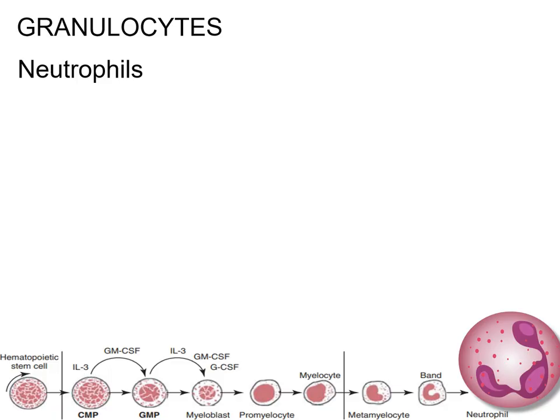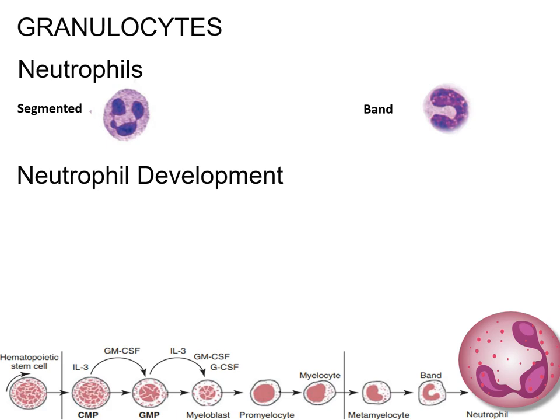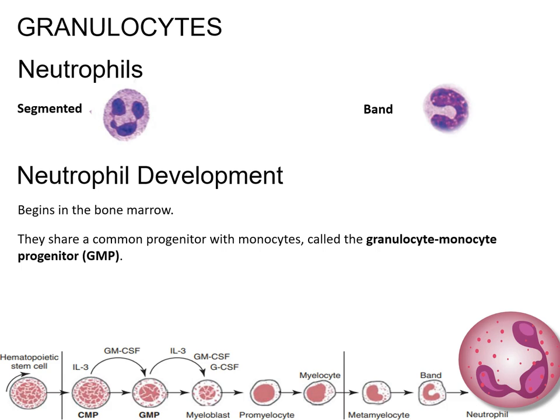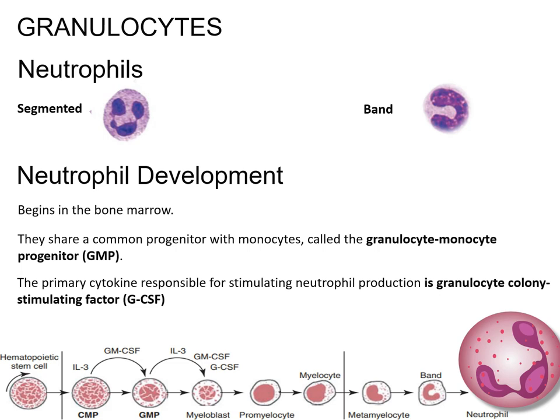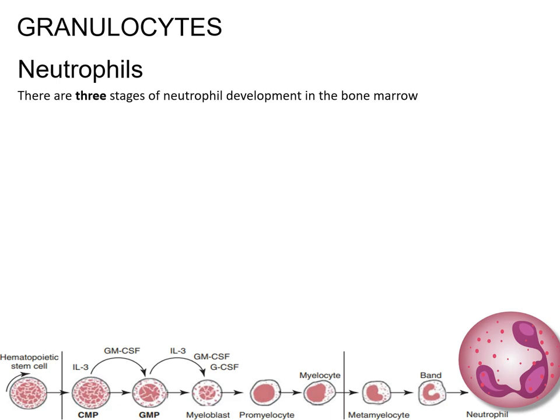Granulocytes — Neutrophils. Neutrophils are present in the peripheral blood in two forms according to whether the nucleus is segmented or still in a band shape. Segmented neutrophils make up the vast majority of circulating leukocytes. Neutrophil development begins in the bone marrow. They share a common progenitor with monocytes called the granulocyte monocyte progenitor. The primary cytokine responsible for stimulating neutrophil production is granulocyte colony stimulating factor. There are three stages of neutrophil development in the bone marrow: the stem cell pool, the proliferation pool, and the maturation pool.